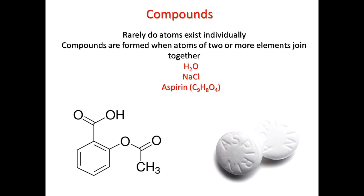Similarly, if you combine nine carbons, eight hydrogens, and eight oxygens and put them in a particular arrangement, this is simply aspirin — a medicine we take for headache relief, and it's also used to thin the blood for some patients nowadays. This should show you the huge scope of chemistry: just by combining different elements in different ratios, you can form really interesting materials.